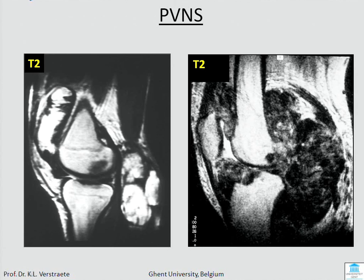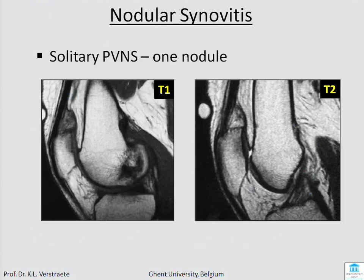Some examples: here we have pigmented villonodular synovitis — very dark on T2. This patient has a large effusion, whereas this patient has a lot of hemosiderin and almost no effusion. There is also a special form: solitary PVNS, which has the special name nodular synovitis. You will see a lesion with dark areas on T1 and T2, and this gives you the diagnosis. It's connected to the synovium of the joint.